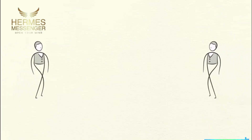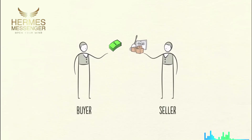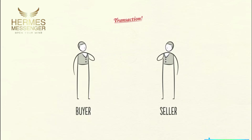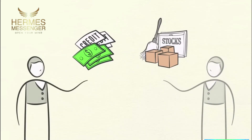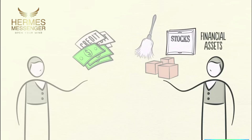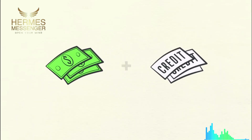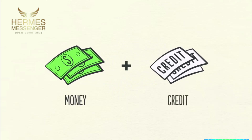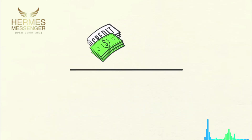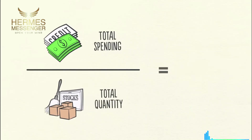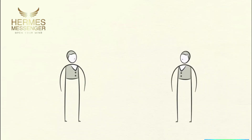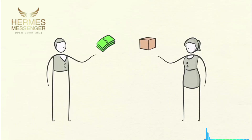An economy is simply the sum of the transactions that make it up, and a transaction is a very simple thing. Every time you buy something, you create a transaction. Each transaction consists of a buyer exchanging money or credit with a seller for goods, services, or financial assets. Credit spends just like money, so adding together the money spent and the amount of credit spent, you can know the total spending. The total amount of spending drives the economy. If you divide the amount spent by the quantity sold, you get the price. That's a transaction — it's the building block of the economic machine. All cycles and all forces in an economy are driven by transactions.